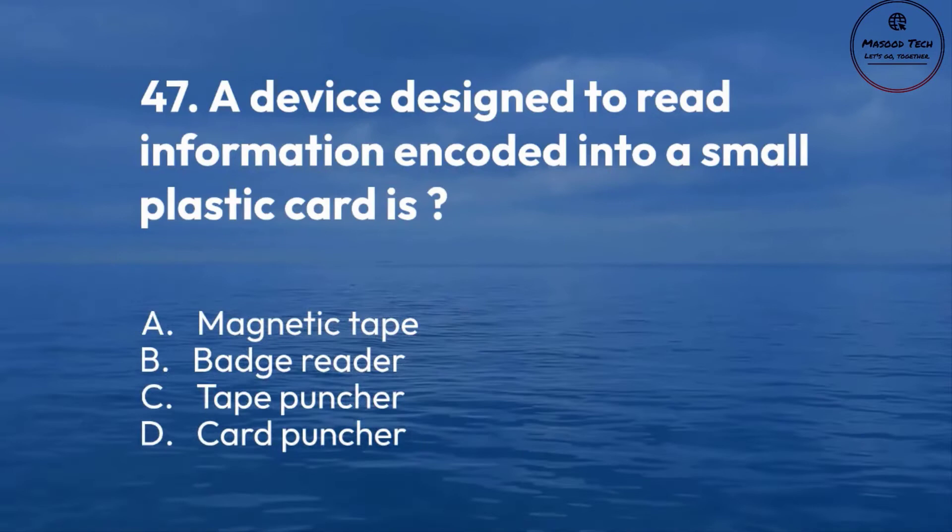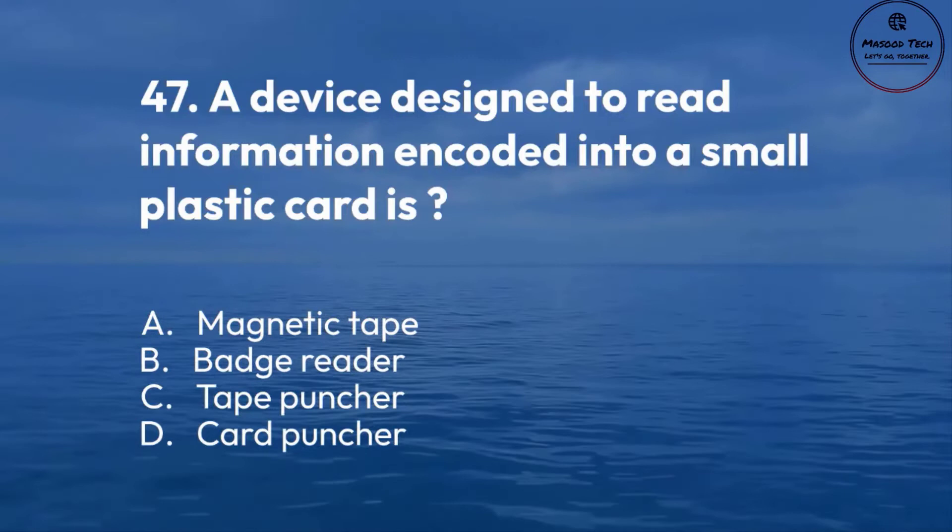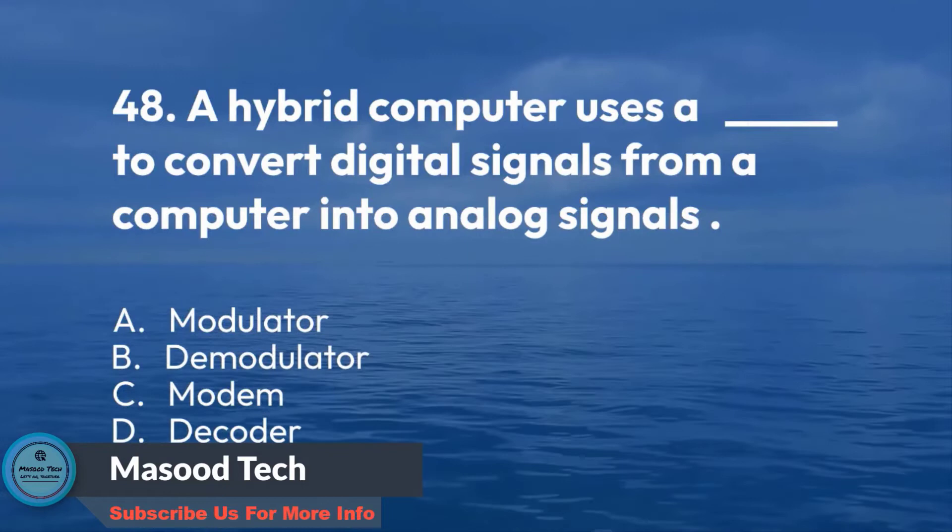Number 48. A hybrid computer uses a device to convert digital signals from a computer into analog signals: A. Modulator. B. Demodulator. C. Modem. D. Decoder. Correct answer is C.